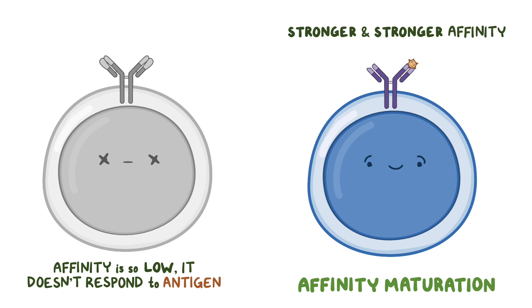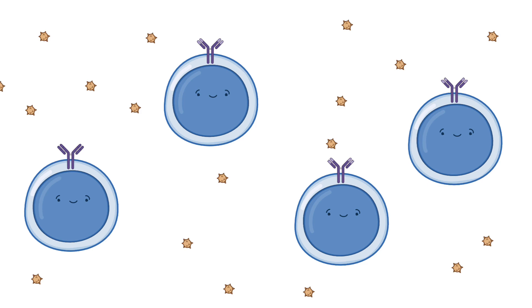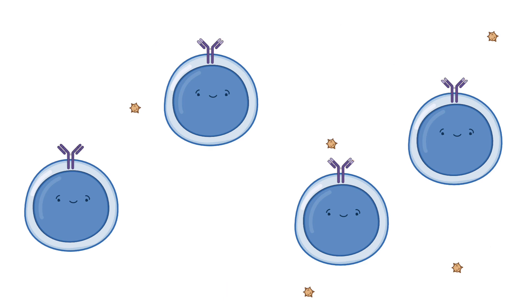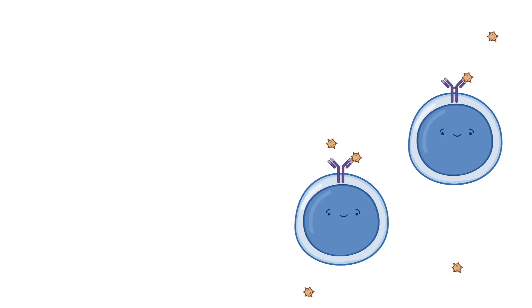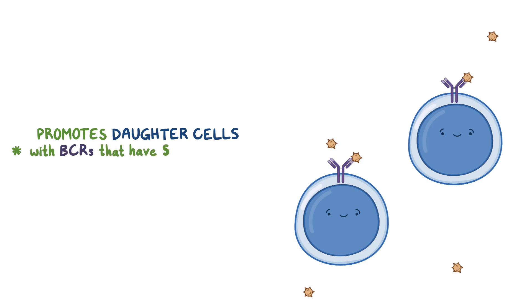It's really like natural selection on a cellular level, sped up so that we see changes happening over days instead of thousands of years. While all of this is happening, there's an immune response taking place with lots of antigen floating around. Over time, as the immune system clears away more of the infection, there's less antigen left for affinity maturation. That means only the BCRs with the highest affinity will be able to bind to the small amount remaining — so as antigen is removed, it promotes only the daughter cells with BCRs that have the strongest ability to bind the antigen and mount a response.